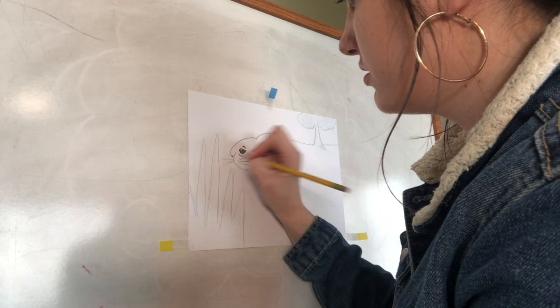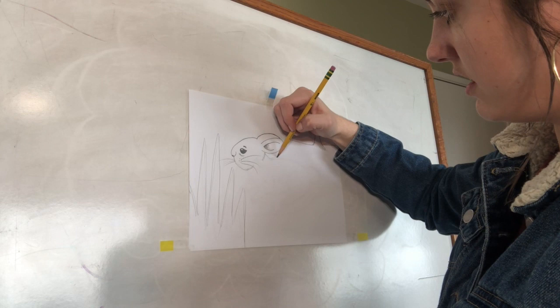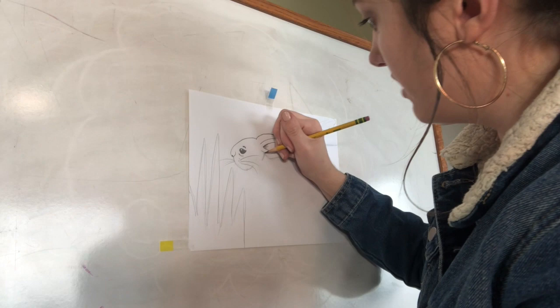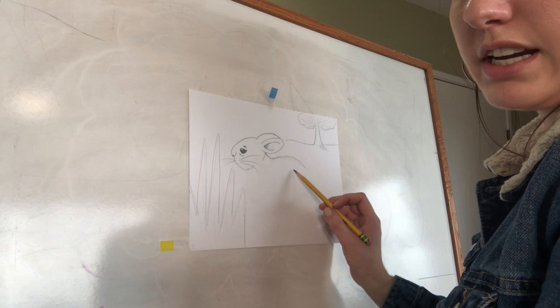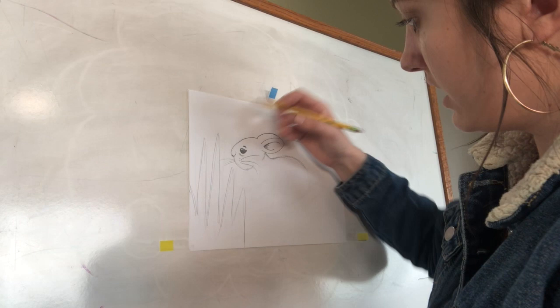Next we're going to do the neck. Sketch it out, then follow the back — the back curves a little bit upward. You can make it look like fur by making different lines along the back. We have a little neck and arched back. We'll save the tail for last since that's really fun. Now let's do the other side of this rabbit's neck.